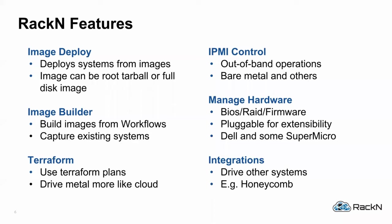Out-of-band management is important for metal — you need to power it on, power it off. Rackin provides tools for those services and can configure the out-of-band management system in an automated way. We have hardware management pieces where you can configure your RAID, BIOS, and firmware updating. Dell is well-supported from our history, and some SuperMicro boxes as well. Through the plugin system we can integrate with just about anything — for example, a Honeycomb.io plugin that takes DRP logs and pushes them directly in for aggregation, searching, and control.